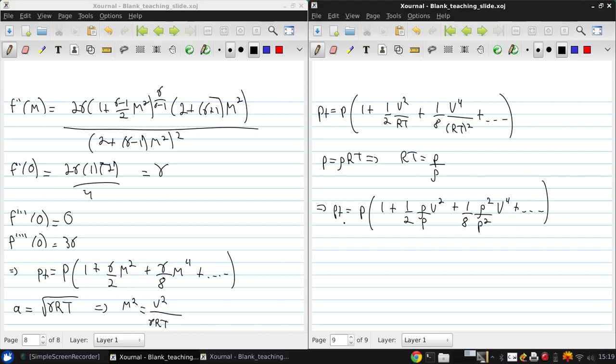Now if we only keep the first two terms, we see that P_t is approximately P times (1 plus 1 half rho over P v squared). And if we carry out the expansion, we get the stagnation pressure is approximately the static pressure plus 1 half rho v squared, which is Bernoulli's equation.